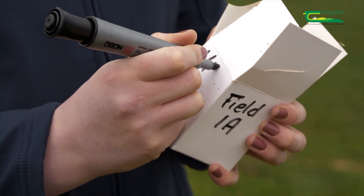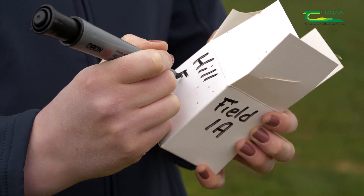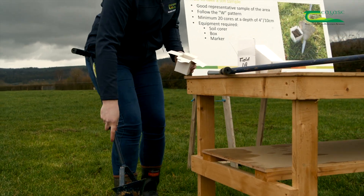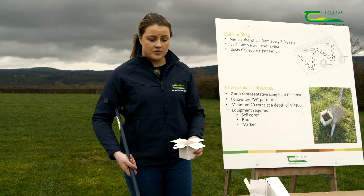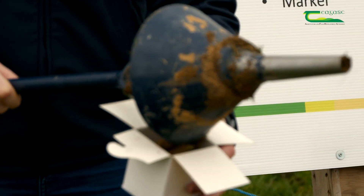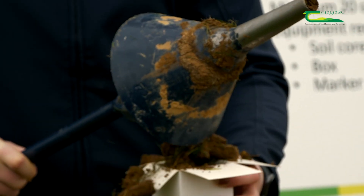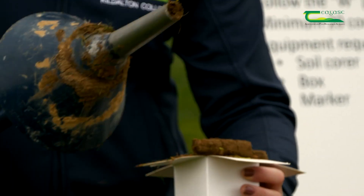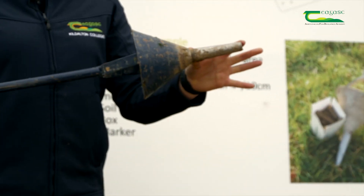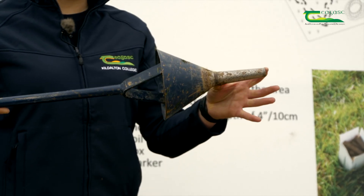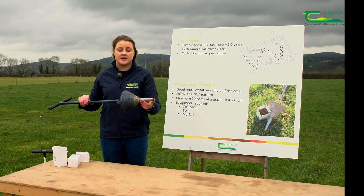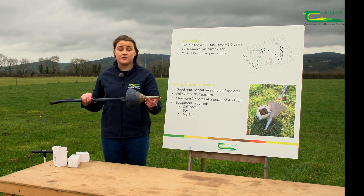It's a good idea to write the field name as well, such as Hillfield or Lowfield, so the farmer recognizes the results when they come back. When using the soil core, it's important that we take our soil samples to a depth of 10 centimetres or 4 inches to ensure we're getting a good core that can be analyzed in the lab. This is especially important for your phosphorus levels.